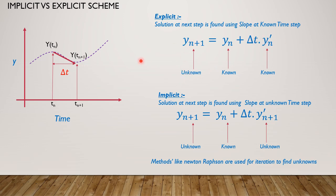All known quantities are on the RHS and all unknowns are on the LHS side of the equation — hence the name is 'explicit,' as these two are explicitly defined. For the implicit scheme, you can see that the known quantity and the unknown lie on the same side of the equation, and hence the name is 'implicit.' We have to solve it using methods other than analytical. In the next slide, we will understand the detailed differences and similarities between these two in connection to your FE process.